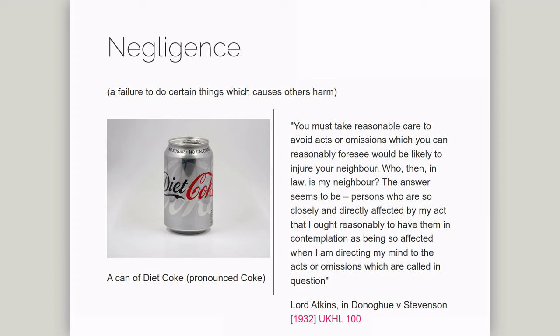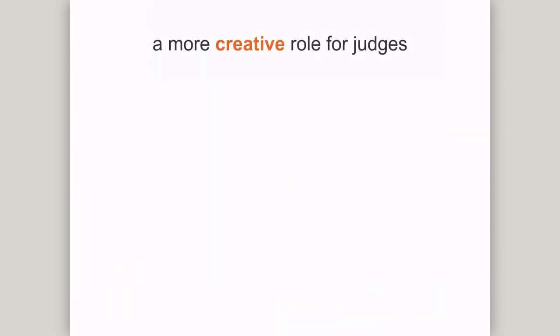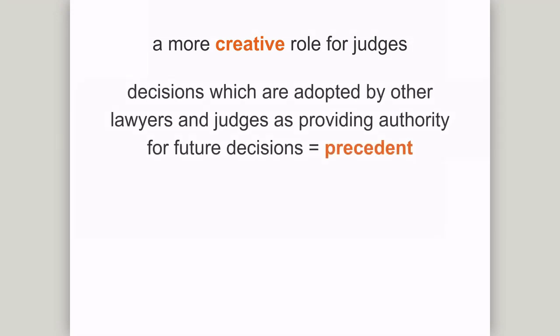Because the general principles of the law are not set out in any single place, judging in a common law system is a more creative act. Judges may have to establish which past decision or precedent applies in a particular case, and whether they need to distinguish between the principles applied in the past and the principles they apply in the here and now. If their decision is particularly convincing, it might be cited by other lawyers and judges in time, and thereby become precedent.